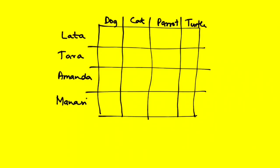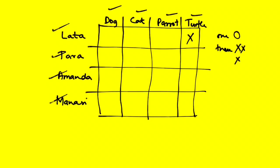We have four girls: Latha, Tara, Amanda, and Manasi, and four pets: dog, cat, parrot, turtle. We put a cross for not owning and a circle for owning. Every row will have only one circle and three crosses, because each person can own only one pet. Starting with: Latha does not have a turtle — put a cross. Put two crosses to show Tara and Amanda do not own a dog. Put two crosses to show Manasi cannot have a dog or a cat. By the process of elimination, we know Latha owns the dog.